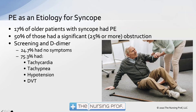PE has been associated as a possible etiology for syncope. An elderly patient who passes out is often thought of from a neurologic standpoint, but we've found that 17 percent of older patients with syncope had a pulmonary embolism as the cause. Often those two things aren't connected, but in many patients that can be the case. 50 percent of those had a significant obstruction. Screening with D-Dimer found that 73 percent had tachycardia, tachypnea, hypotension, DVT, and a positive D-Dimer, but 24 percent had no symptoms of pulmonary embolism — just a positive D-Dimer.